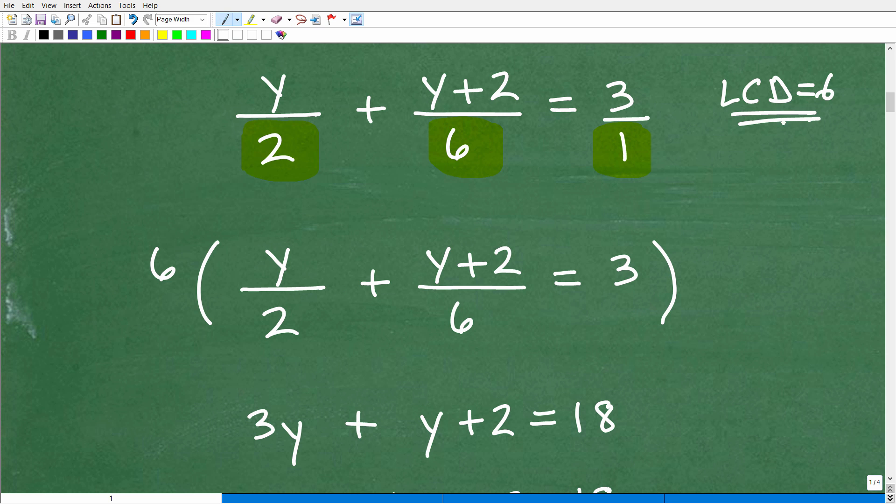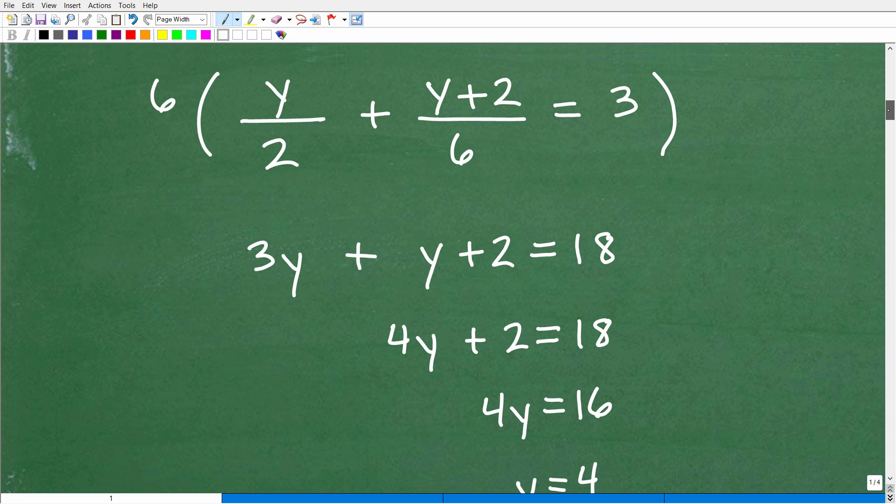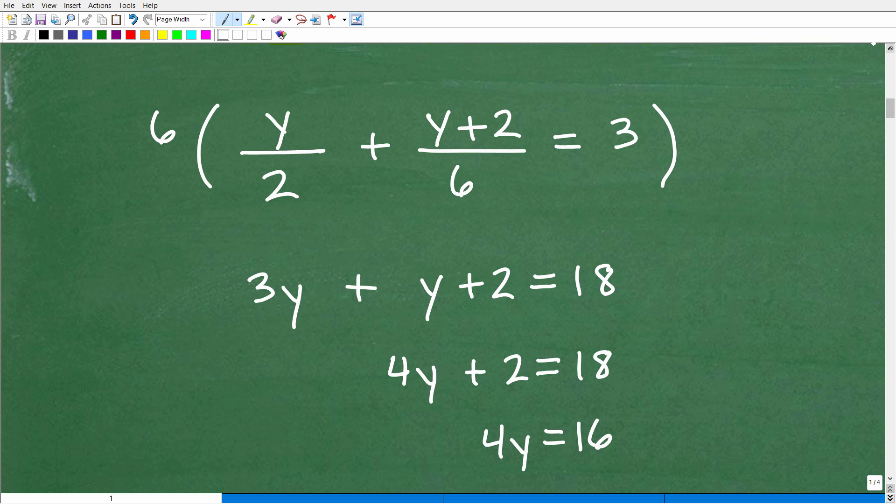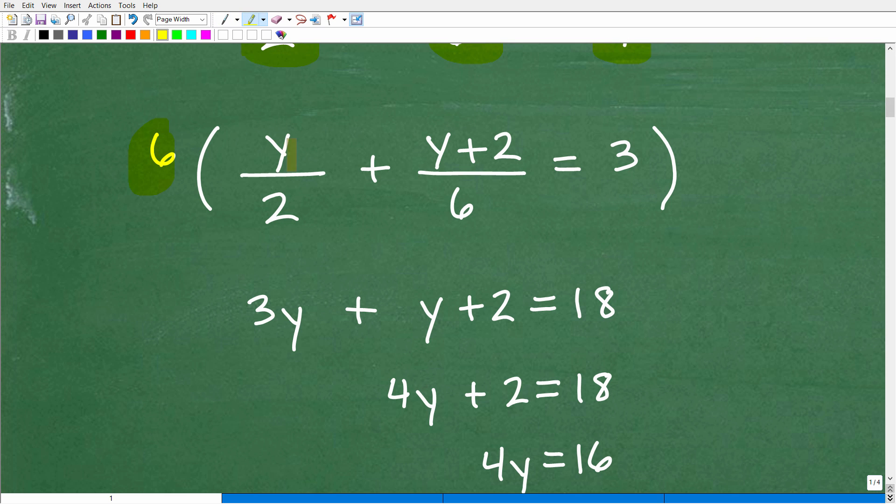So don't forget about that because you're going to be encountering both types of equations. And this is obviously the easier one. All right. So now that we know that our LCD is six, we're going to multiply six by this entire equation to clear the fractions. Let's go ahead and do that now. So it's going to be six times this, and then six times this, and then six times this. Let's go ahead and do that now.